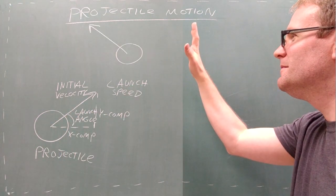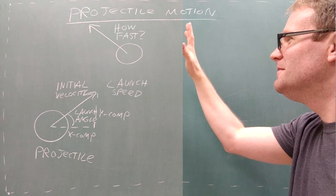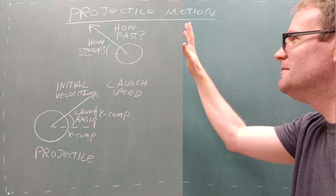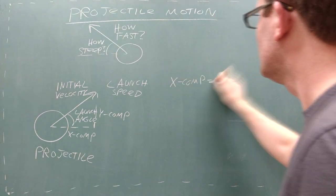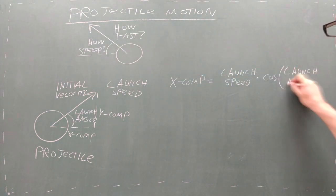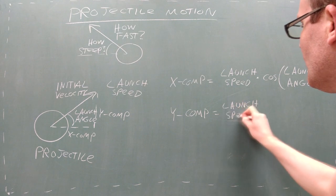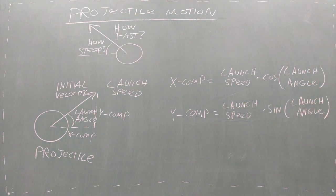After all, when you throw a basketball, you usually think in terms of how fast you're going to throw it and how steep or shallow you're going to toss it. We can calculate the x and y components of this initial velocity fairly easily using the cosine and sine functions.